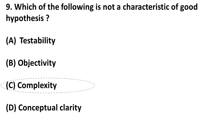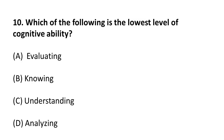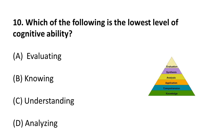The next question is: which of the following is the lowest level of cognitive ability? Remember Bloom's Taxonomy — the highest level of cognitive ability is evaluation, and the lowest level is knowledge, that is, knowing things. You can see the Bloom's Taxonomy chart here. The correct answer is knowledge.